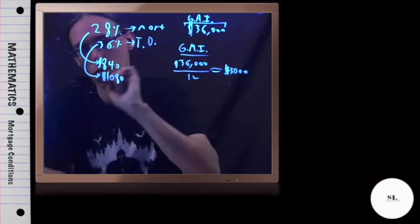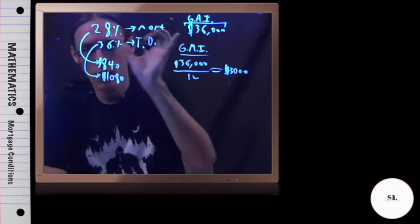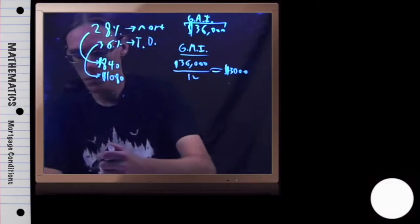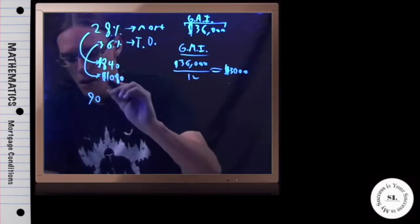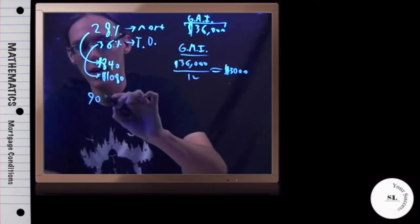which means $840 a month. And we're also told that all together, for all debt, we should not be spending more than 36% of that monthly income, which is the same thing as saying $1,080.